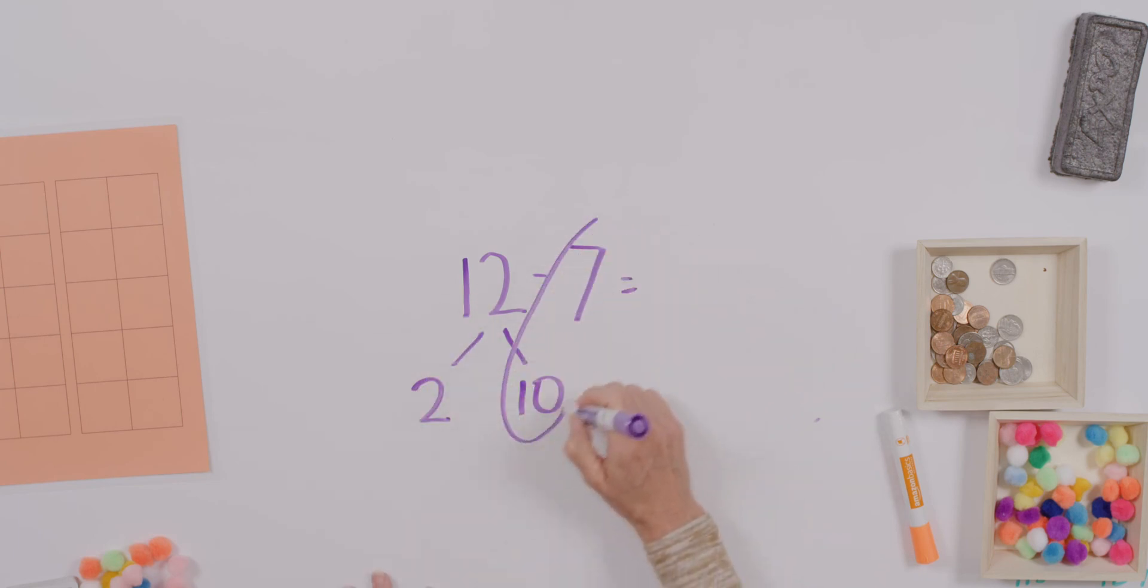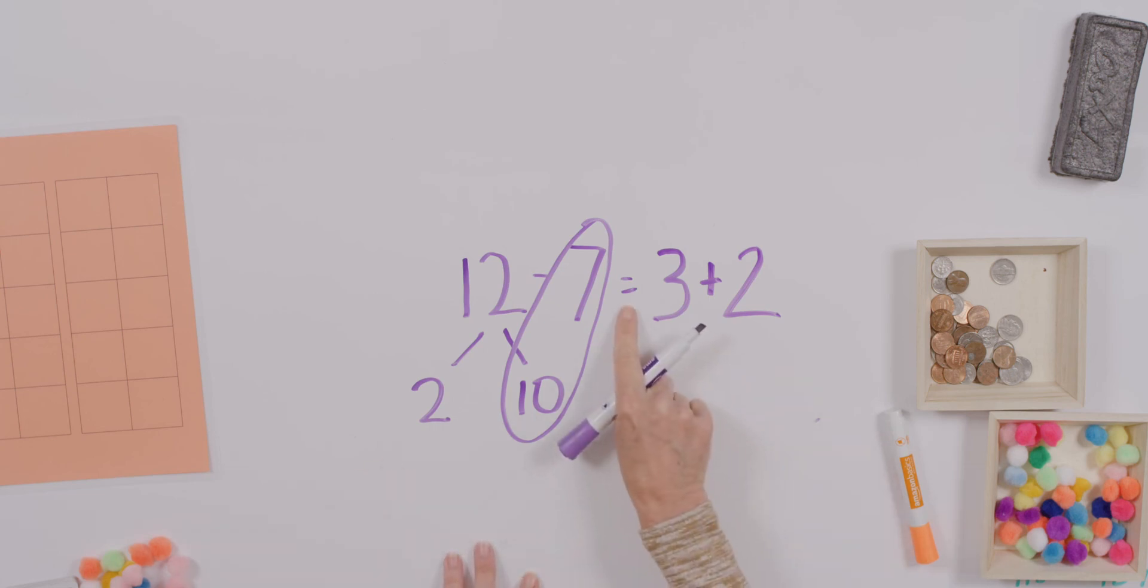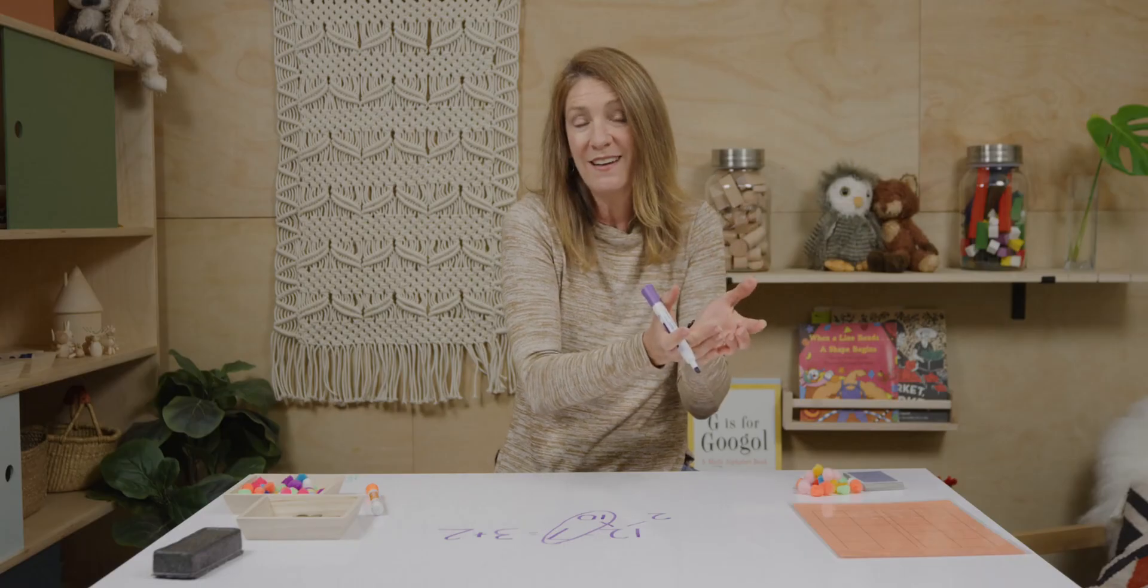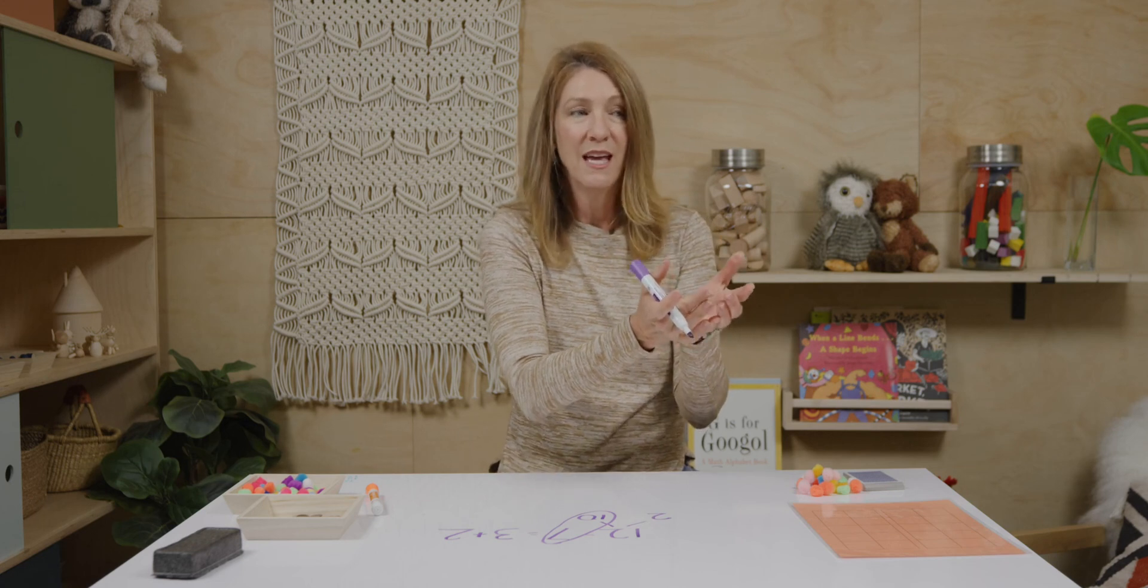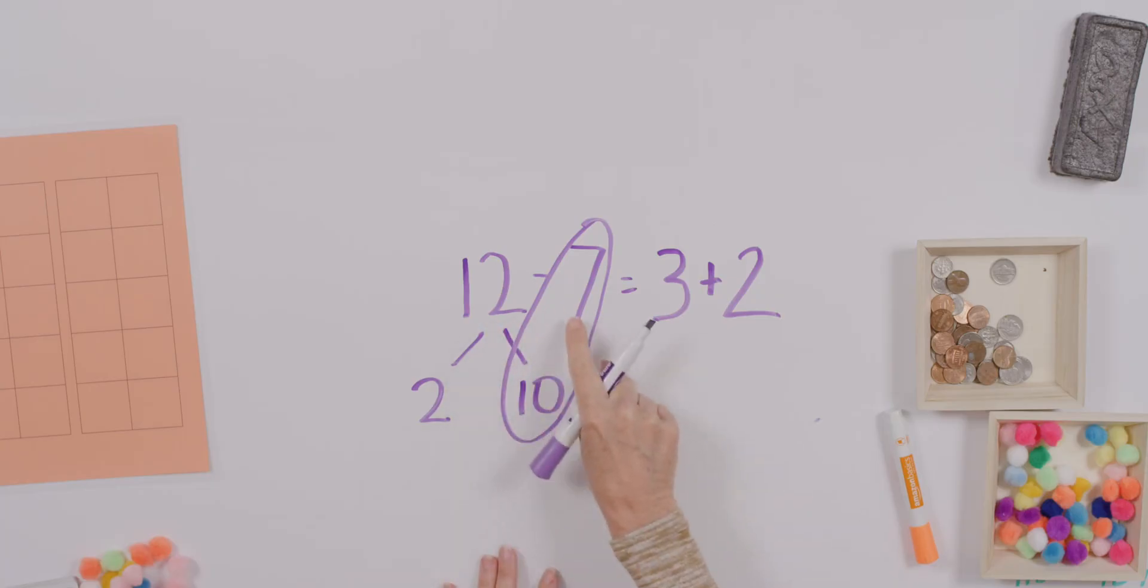So, once we say ten minus seven, what do we get? Oh yeah. That's right. We get a three. Now, we have to remember this piece over here. Alrighty. The reason I like to say that this is like a balance is I want you to understand that the equal sign has a special meaning. It means that all of the stuff on this side of the equation is the same in value as the stuff on this side of the equation.